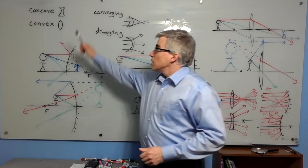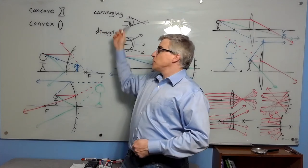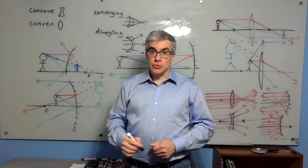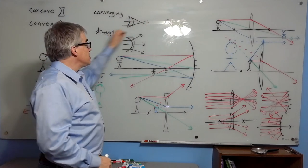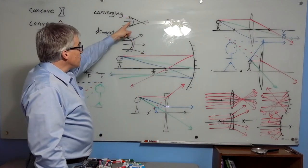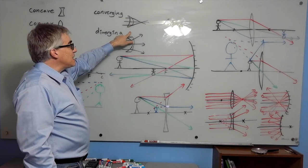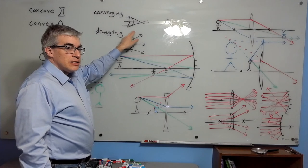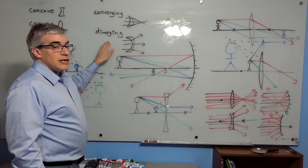One last point. Concave and convex refer to shape. Converging and diverging refers to what they do. A converging lens brings light together. Diverging scatters it. If you have two surfaces and if one of them is concave and the other is convex, the way you decide is if it's thicker in the center, it's converging. If it's thinner in the center, it's diverging.